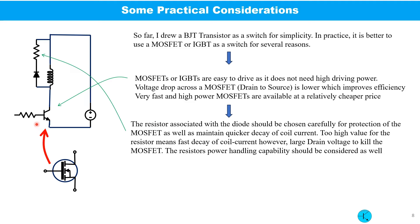So far I drew a bipolar junction transistor as a switch for simplicity. In practice, it is better to use a MOSFET or IGBT as a switch for several reasons. MOSFETs or IGBTs are easy to drive as it does not need high driving power. Voltage drop across the MOSFET drain and source is lower which improves the efficiency, and very fast high power MOSFETs are available at a cheaper price.